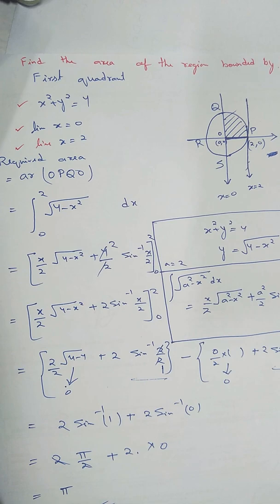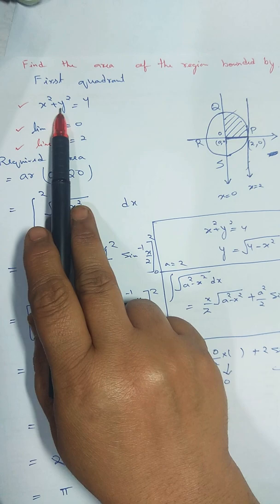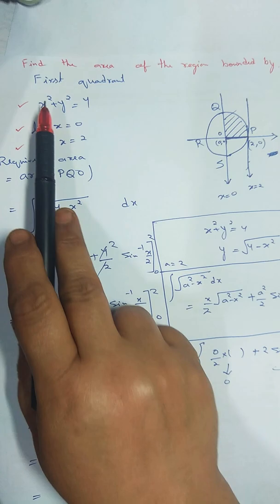Hello friends, today I am taking one more question: find the area of the region bounded by the circle x² + y² = 4, line x = 0, line x = 2, and there is one more condition given - first quadrant.